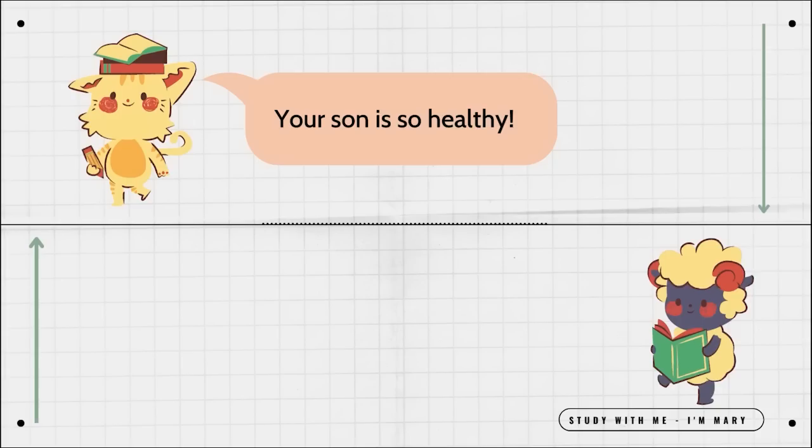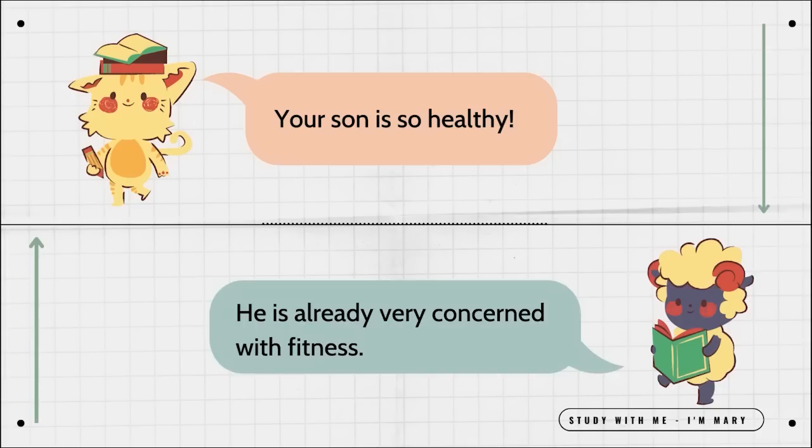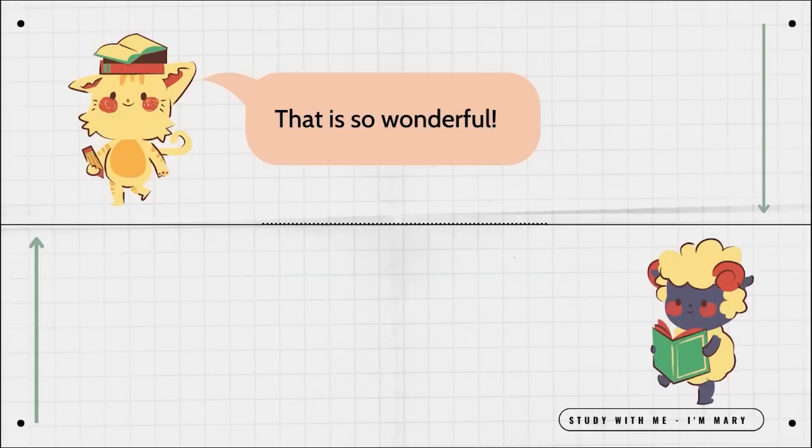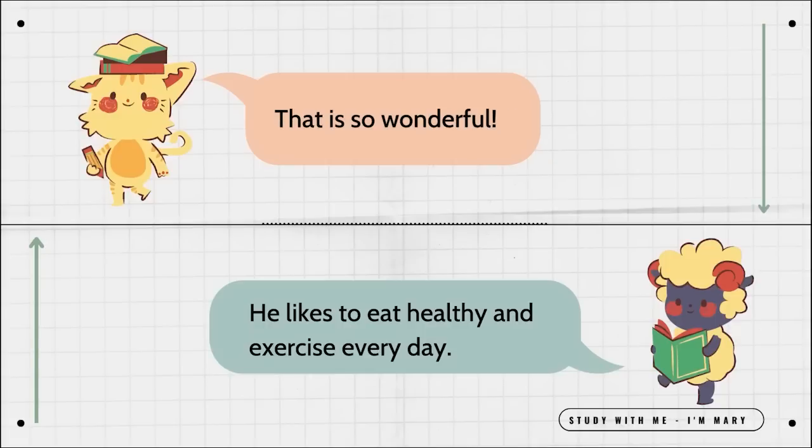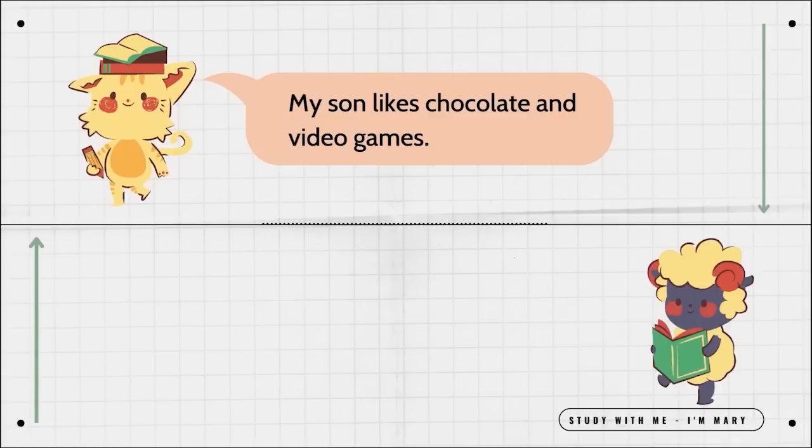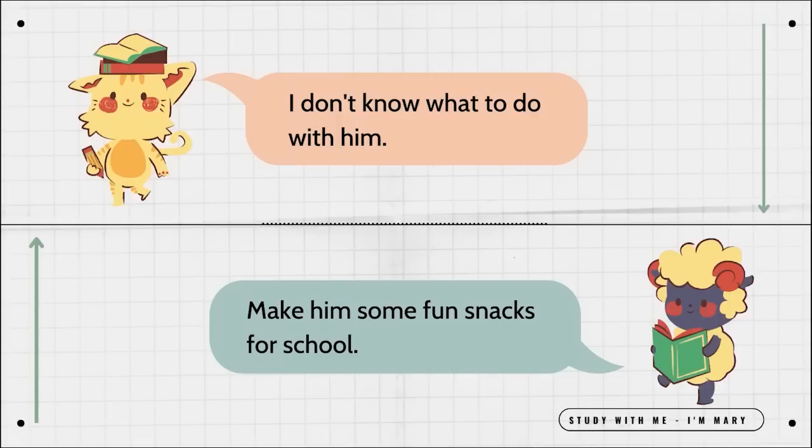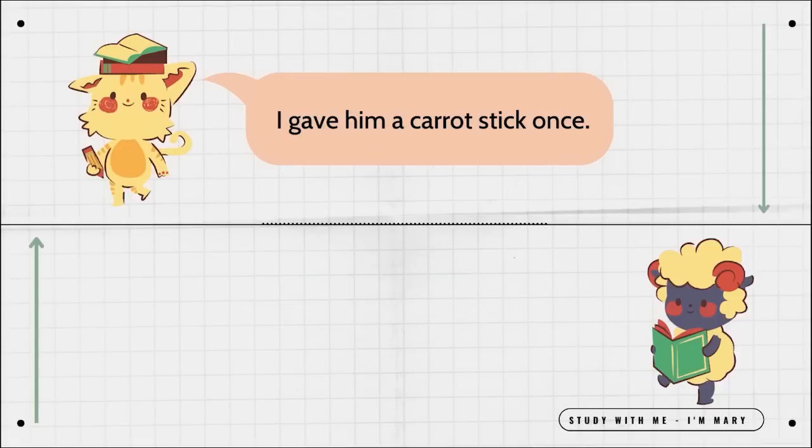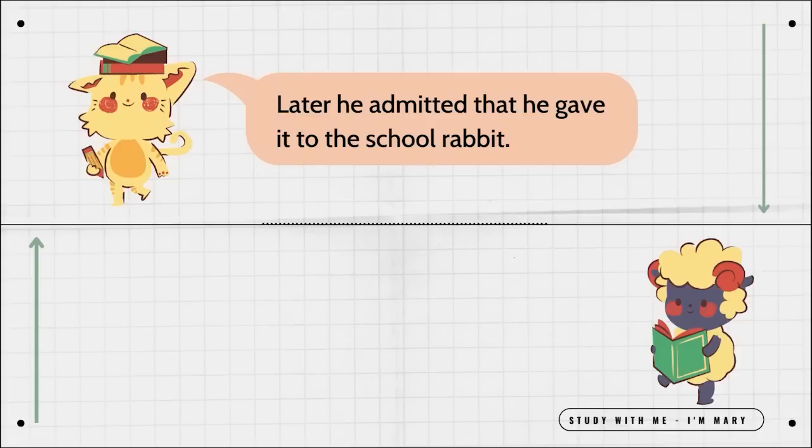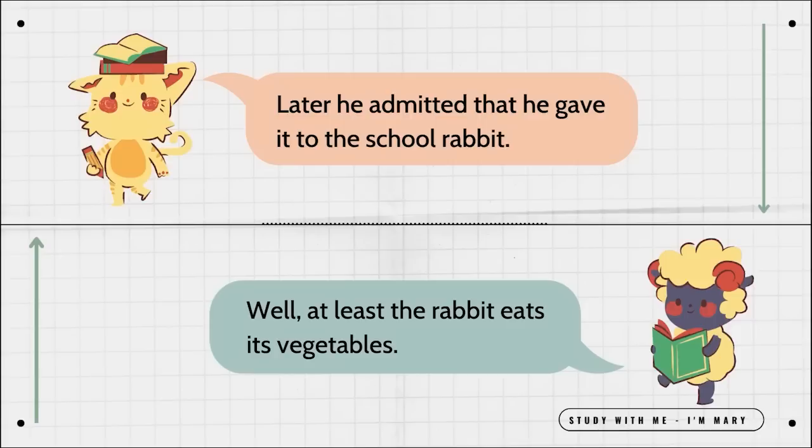Your son is so healthy. He is already very concerned with fitness. That is so wonderful. He likes to eat healthy, and exercise every day. My son likes chocolate and video games. That is not good for him at all. I don't know what to do with him. Make him some fun snacks for school. I gave him a carrot stick once. That's a good snack. Later, he admitted that he gave it to the school rabbit. Well, at least the rabbit eats its vegetables.